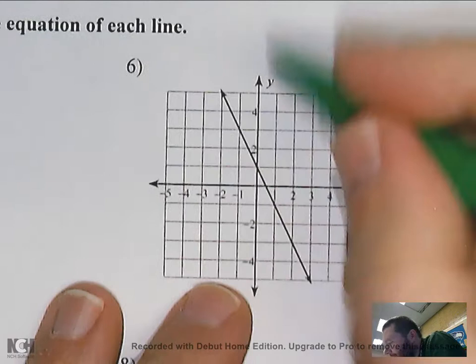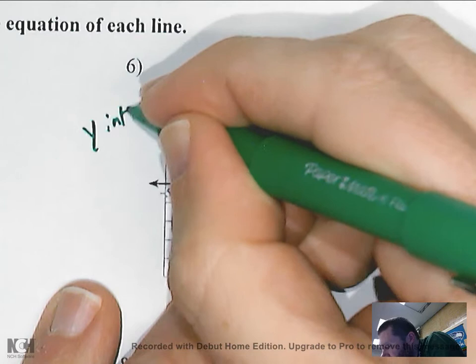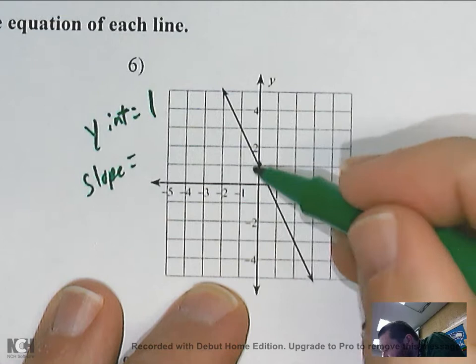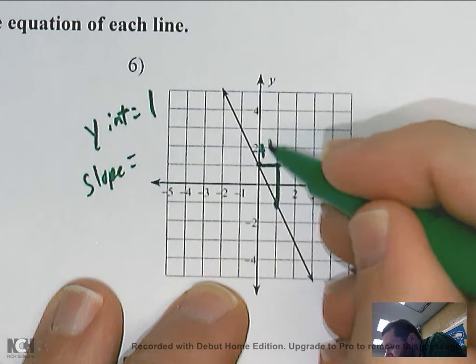This one is hitting at positive one, so the y-intercept is one. For my slope, the next point it hits looks like it's right there.